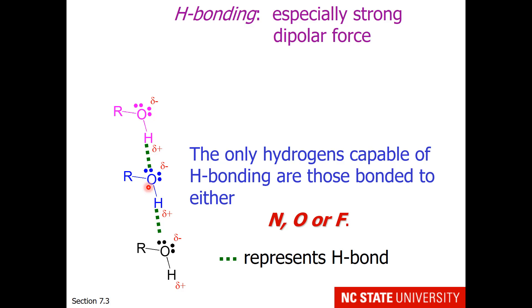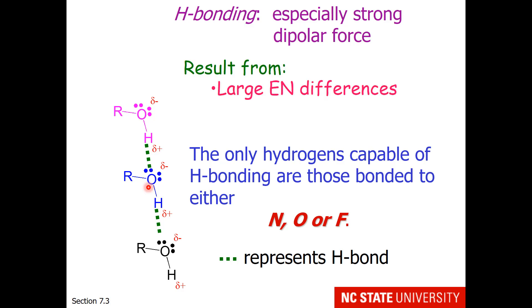Why those three particular elements? Hydrogen bonding results from large electronegativity differences. Fluorine is the most electronegative atom on the periodic table and will have large electronegativity differences with hydrogen. Oxygen is number two. Nitrogen and chlorine are tied for number three. So why isn't chlorine on this list? From Coulomb's law, the closer charges can get to one another, the greater the force between them. Chlorine is large — it's in the third period — whereas nitrogen is small. So hydrogen bonding results from large electronegativity differences and small sizes which allow for close distances.